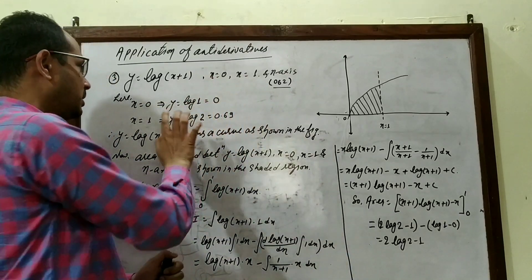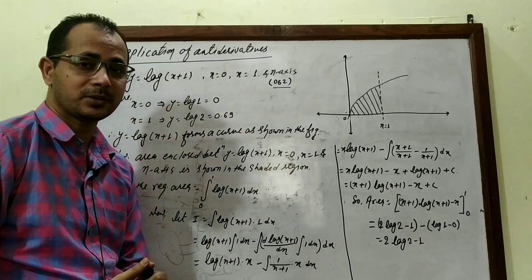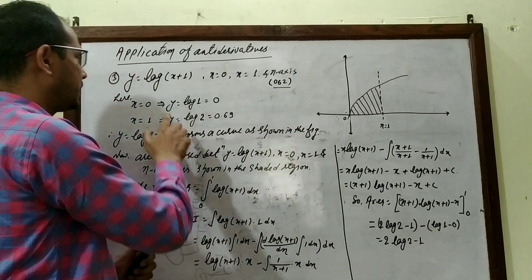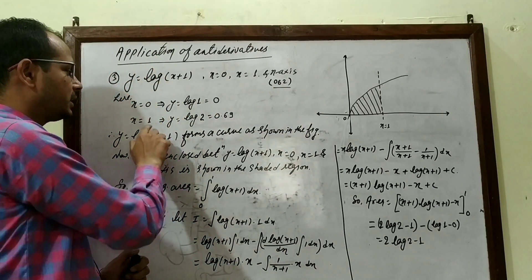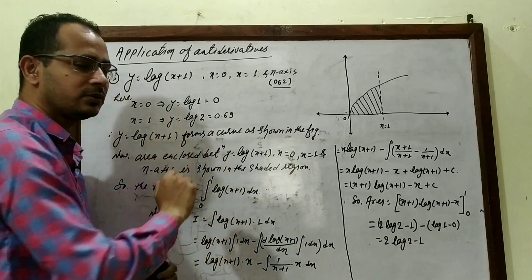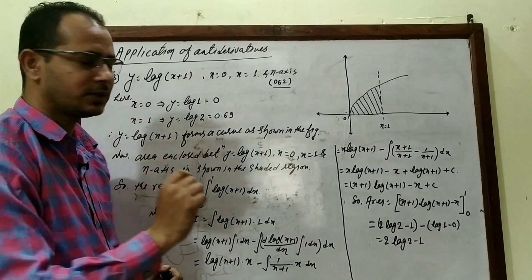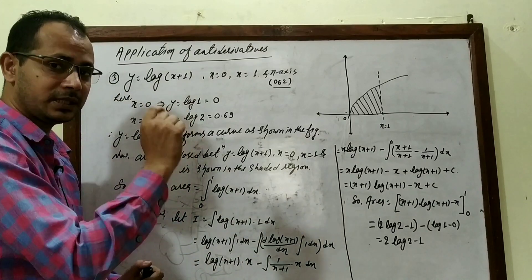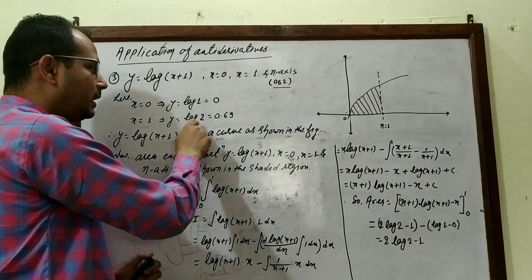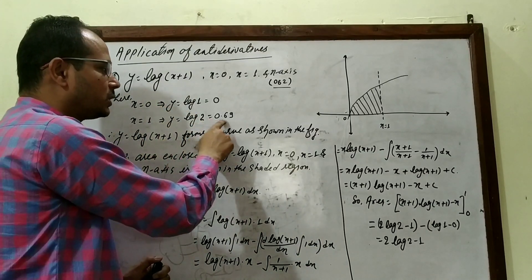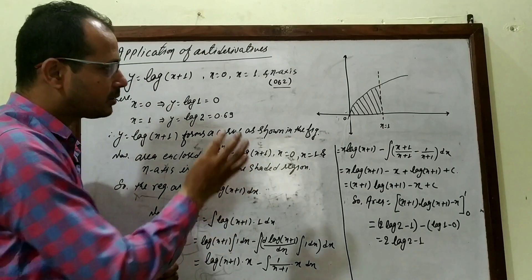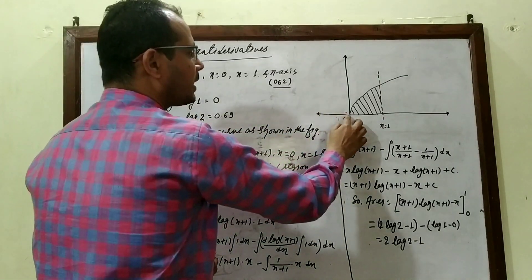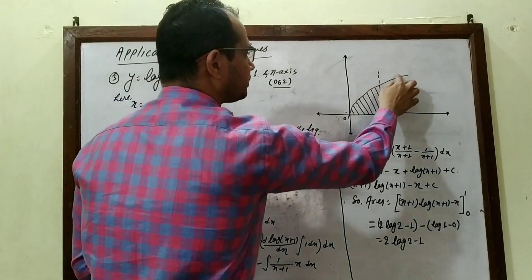To understand the curve's direction, test x = 1: y = log(2), which is ln 2 (natural log), approximately 0.69. This is positive, so the curve goes into the first quadrant. We can now draw the rough curve for y = log(x + 1).